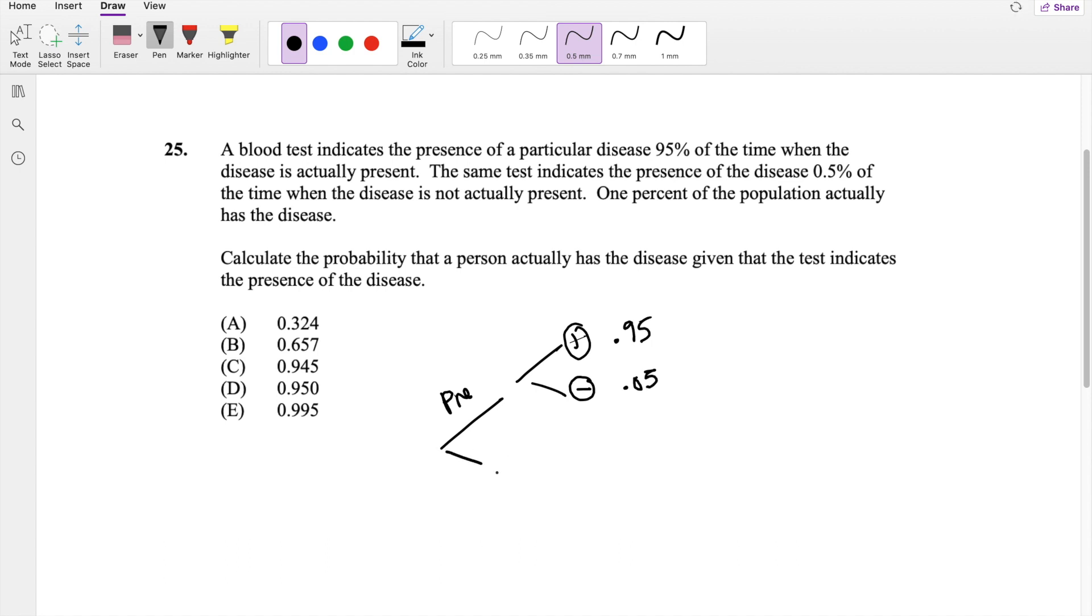When you don't actually have the disease, so not present, it detects the disease with 0.5%. So it tests positive with 0.005. Do you agree? Because that's 0.5%. And so that means it tests negative with 0.995.